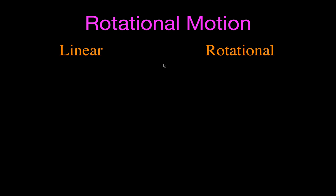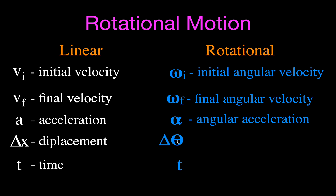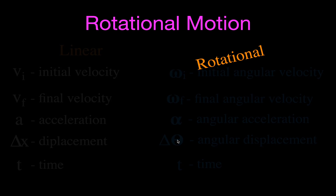Before we start, since you've probably already done linear mechanics, it's a good idea to translate that knowledge over to rotational mechanics. For linear mechanics we have initial and final velocity, acceleration, displacement, and time. For rotational mechanics there are analogous terms: angular velocity (omega), angular acceleration (alpha), angular displacement (delta theta), and time — it's really the same concept, just going around in a circle instead of a straight line.